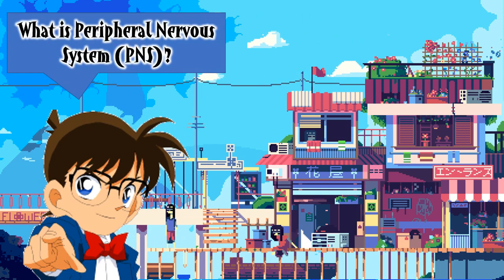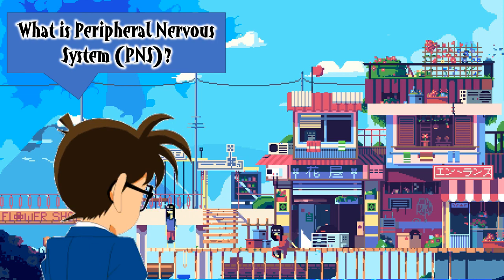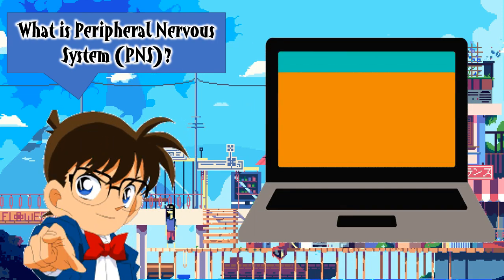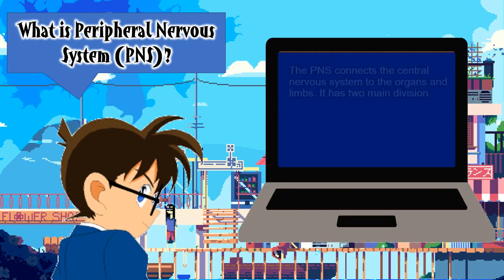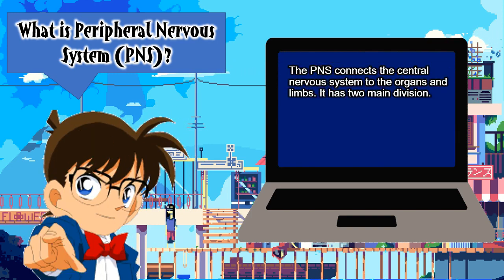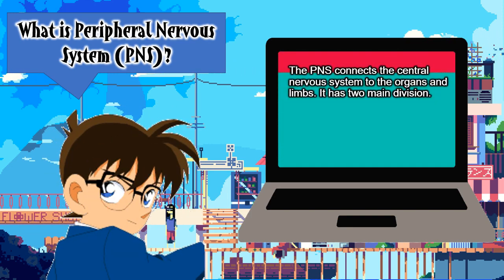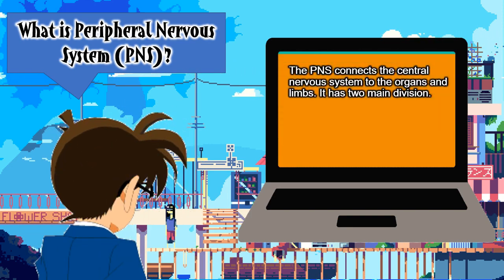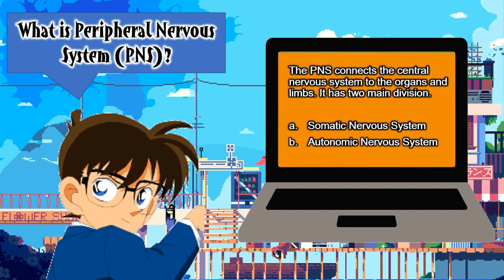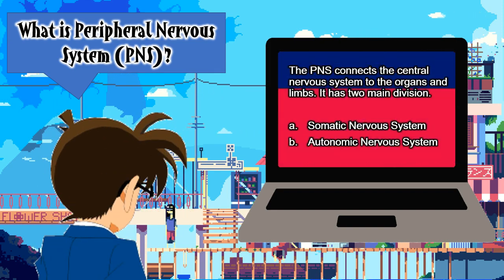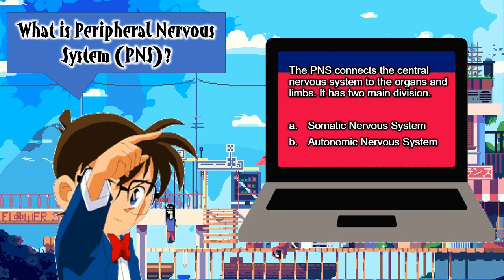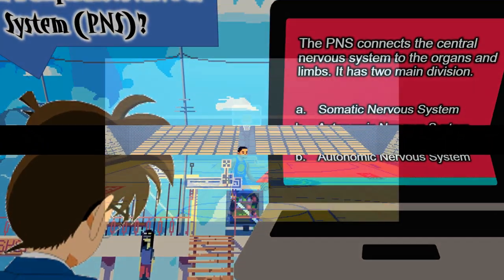The peripheral nervous system connects the central nervous system to the organs and limbs. It has two main divisions: the somatic nervous system and the autonomic nervous system.